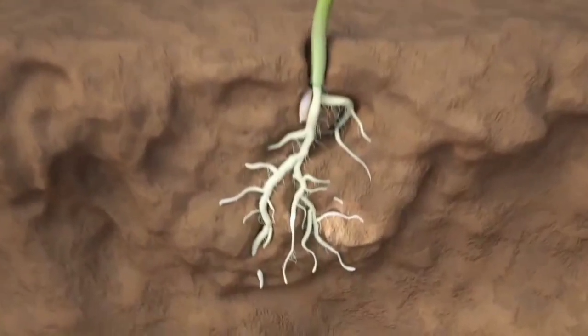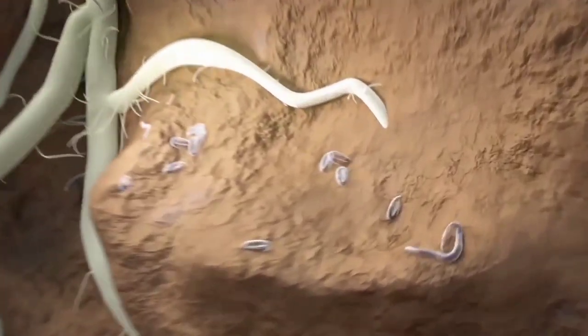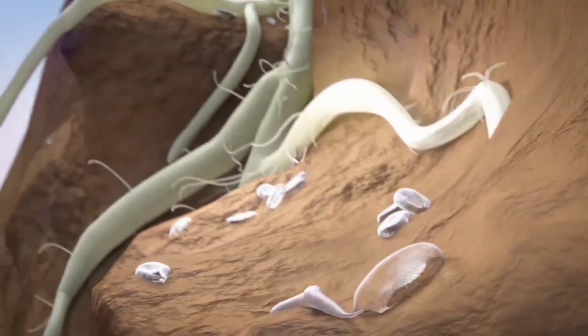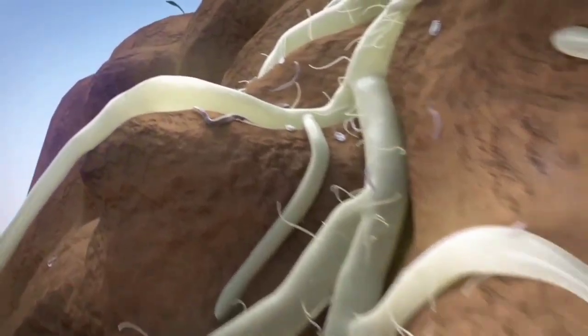Nematodes are responsible for heavy yield and crop losses in fruits and vegetables all over the globe. Tiny eel worms, like the root knot nematode, live in the soil and the larvae attack plant roots.